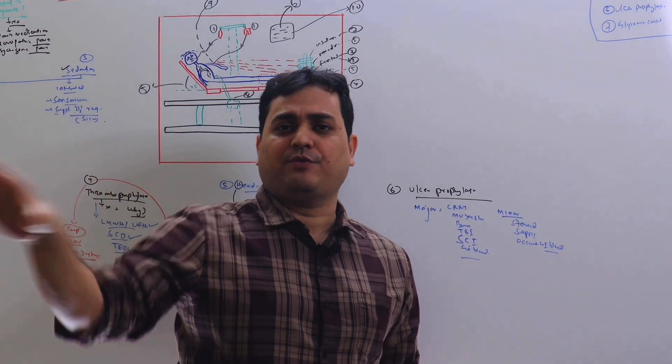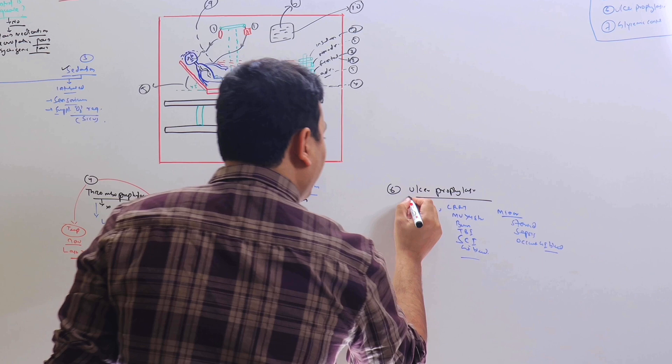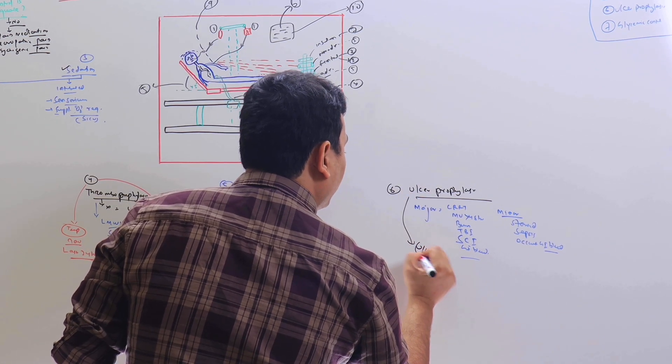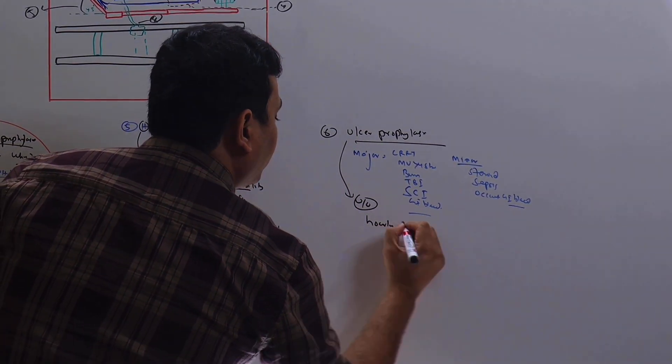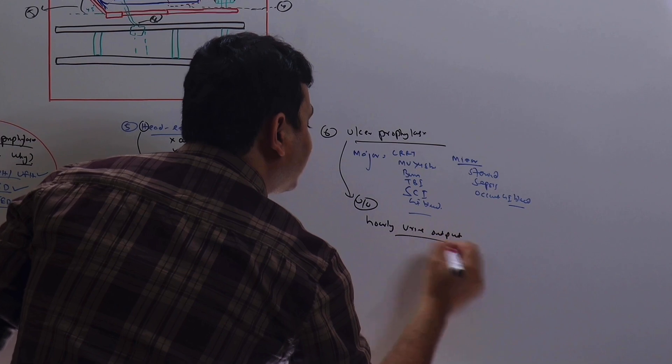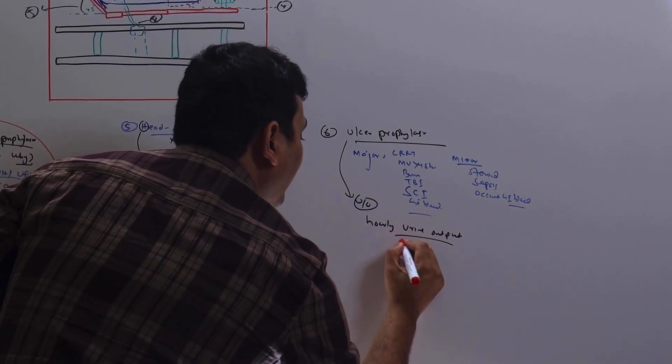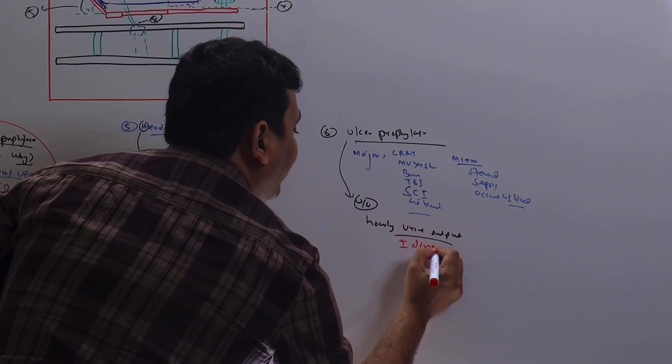Here also I need all of you to mention the urine output, the hourly urine output. And here specifically need to mention whether this urine output is maintained with diuretics or without diuretics—plus minus diuretics—that you have to mention here.